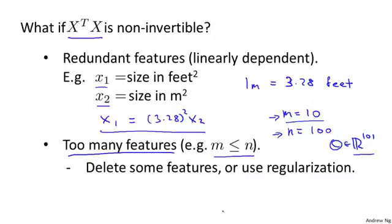We'll see later in this course why this might be too little data to fit this many parameters. But commonly what we do then if m is less than n is to see if we can either delete some features, or use a technique called regularization, which is something that we'll talk about later in this course as well, that will let you fit a lot of parameters, use a lot of features, even if you have a relatively small training set.